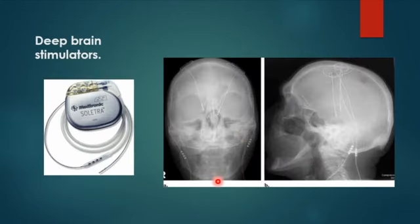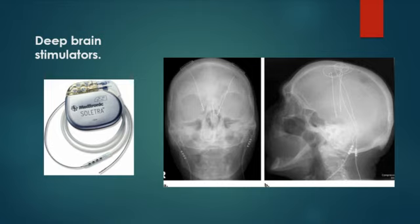The deep brain stimulator device is placed subcutaneously at the chest, with wires passing through the neck and inserted into the basal ganglia of the brain, used in Parkinson's disease patients. It modulates deep brain centers, blocks abnormal signals, and improves communication between brain cells — particularly effective at reducing tremor and stiffness. The effect is literally remarkable — patients shaking uncontrollably stop trembling when the stimulator is activated.